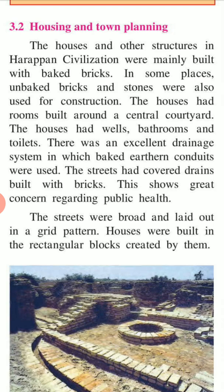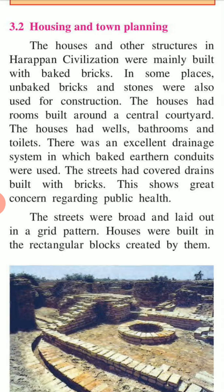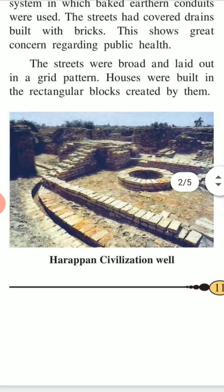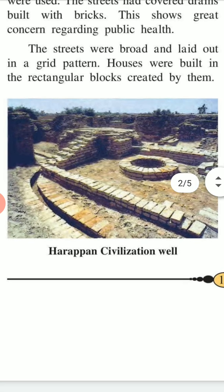There was an excellent drainage system in which baked earth and clay tiles were used. The streets had covered drains built with bricks, showing great concern regarding public health. The streets were broad and laid out in a grid pattern. Houses were built in the rectangular blocks created by them. You can see the Harappan civilization layout well in this picture.